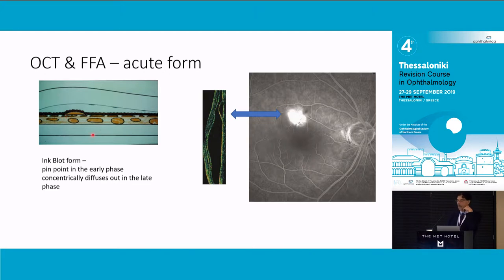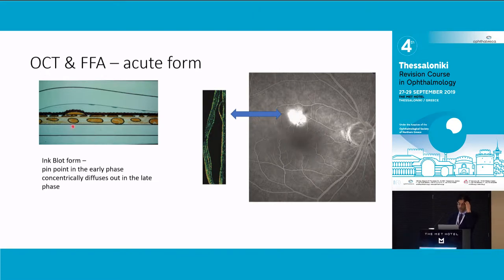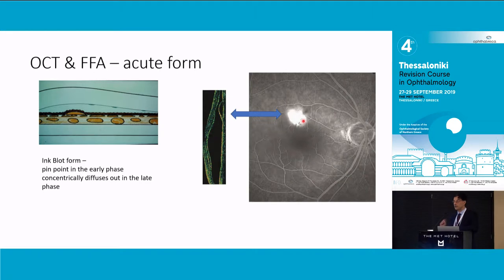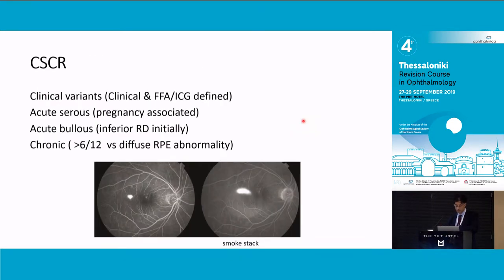No matter how good anyone in the current era thinks they are at medical retina, you go back and look at Gass and you're just humbled every single time. This is Don Gass's drawing, this is the OCT, and this is the fluorescein. You can almost work out the leaking point just by looking at the OCT. And there's the inkblot variant, and then there are other variants on OCT.